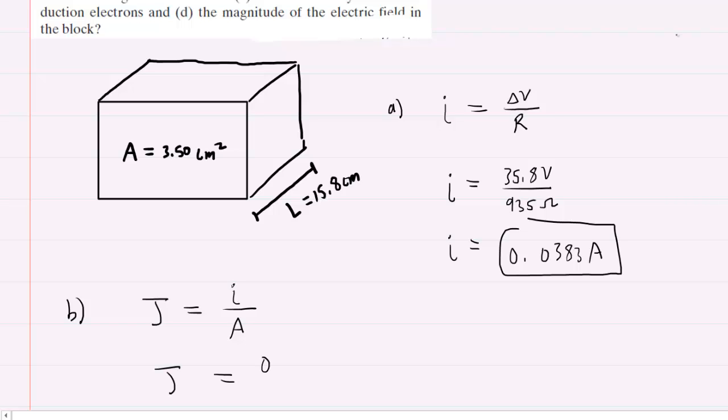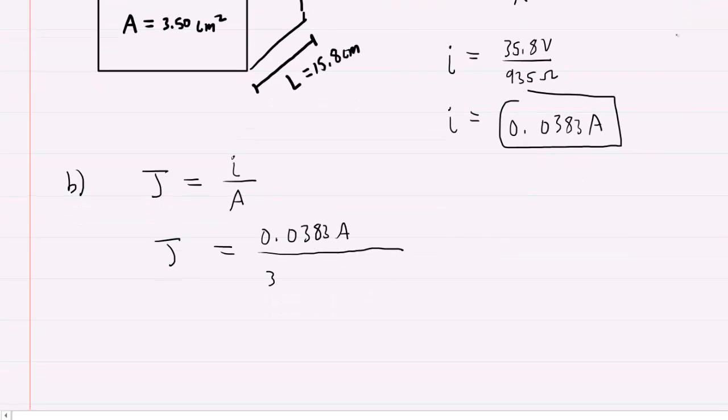We just determined the amount of current going through the block, so we can plug that value in. As for the cross sectional area, that's given as 3.5 centimeters squared. We'll have to convert that into meters squared, so we'll do the conversion right in the calculation.